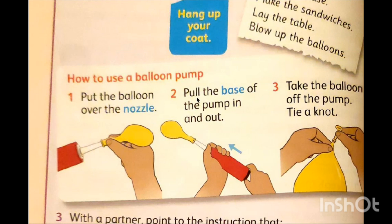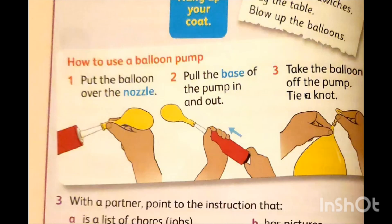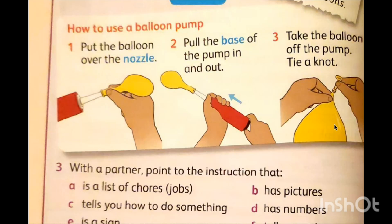Number two: put the base of the pump up and down. The base of the pump — you will pull it up and down. Number three: take the balloon off the pump. Now take off the balloon and tie the knot — this is the knot at the end of the balloon.